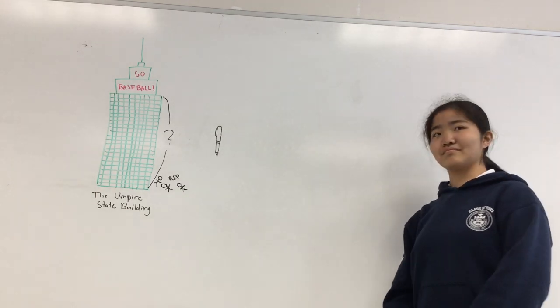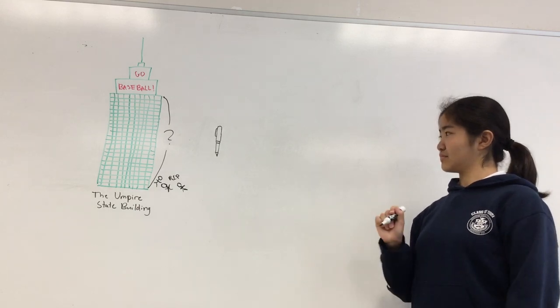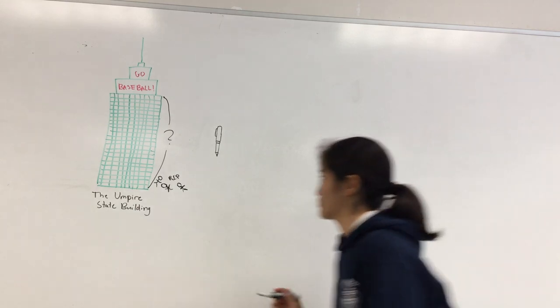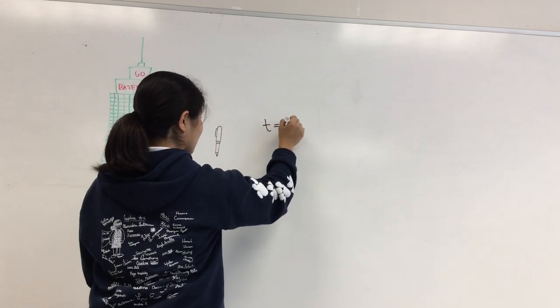For an experiment, we got special permission to drop a pen off the Empire State Building and measure how long it took for the pen to completely fall to the ground. It was 9 seconds.